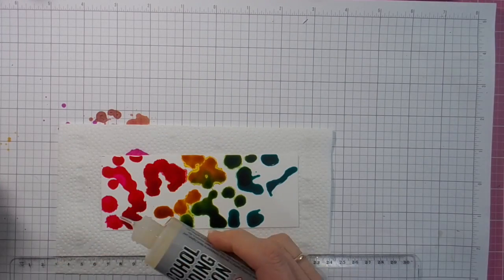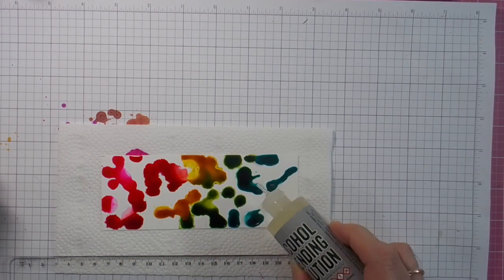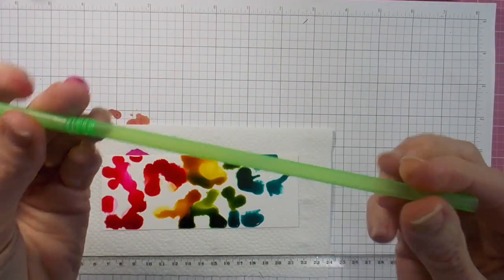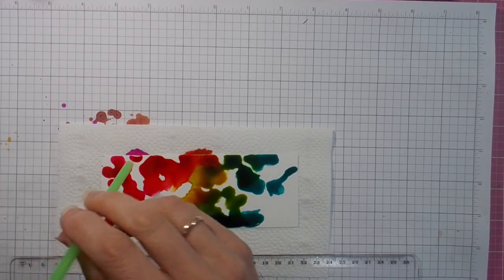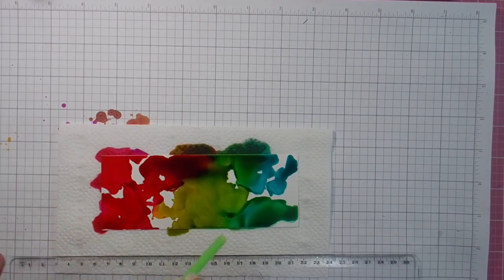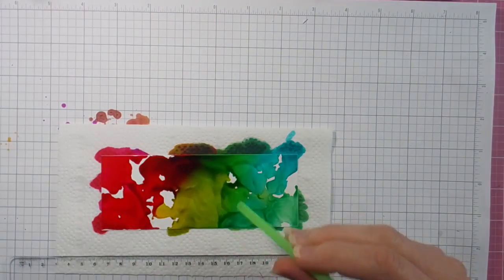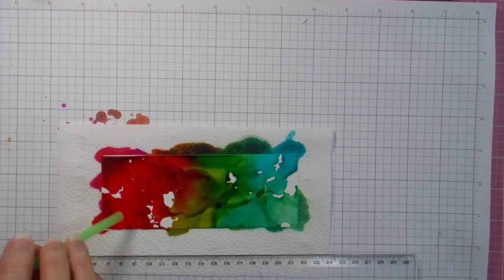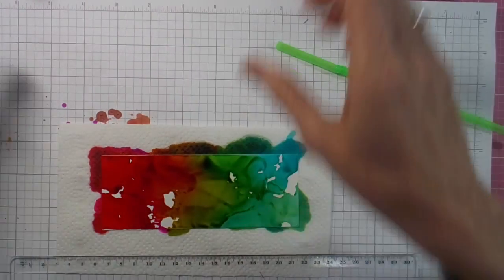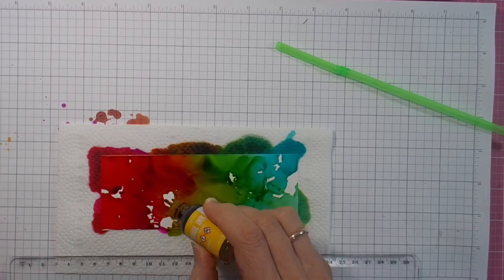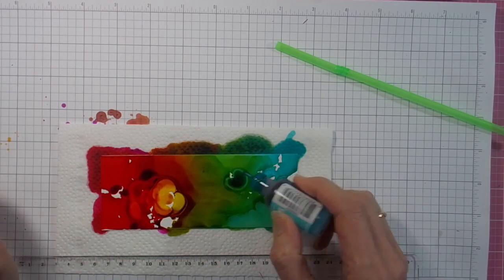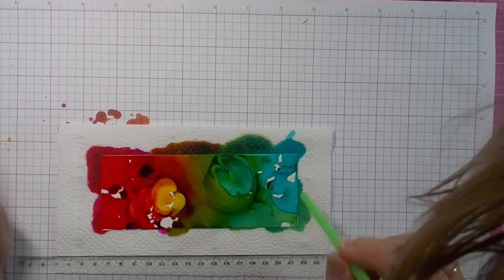Starting off today with the colors you can see here. I've used raspberry and sunshine and pool and citrus, the green color. Then using the blending solution over the top and a straw. Got to get all that spread around. They do tend to do some blending themselves with the blending solution particularly, but the straw just makes them move. Blowing through the straw onto them just makes for more movement.